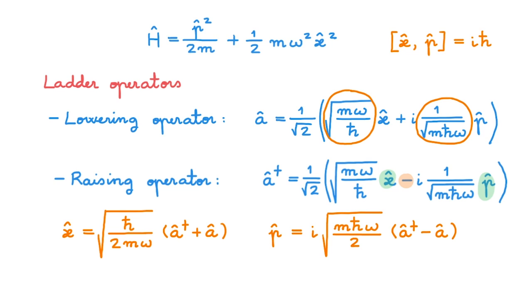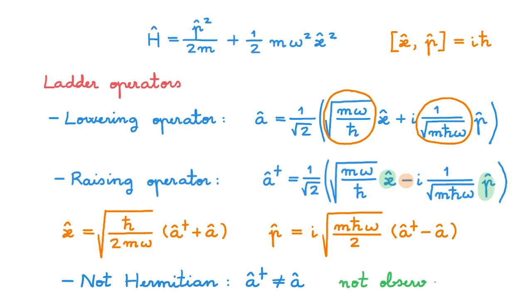The very first thing to note about the ladder operators is that they are not Hermitian operators — in fact by definition they are each other's adjoint. This means that unlike position and momentum, the ladder operators are not observables. You may think: why bother, if we already have the quantum harmonic oscillator Hamiltonian in terms of position and momentum which are themselves observables? But as we'll see as we develop the theory, even though the ladder operators aren't observables, they actually are extremely useful.